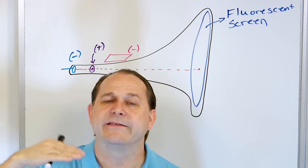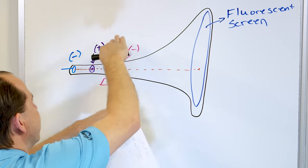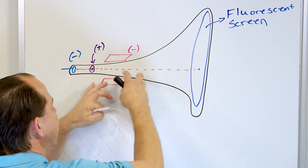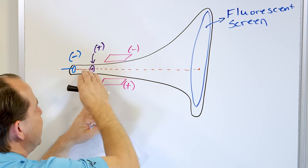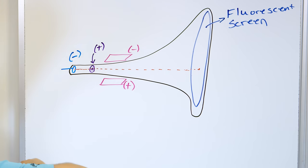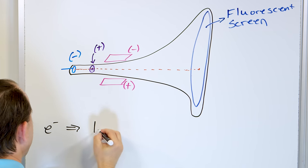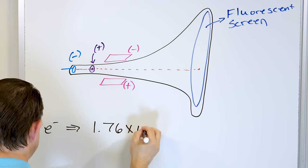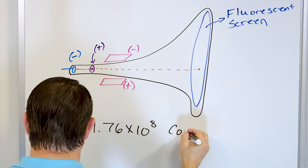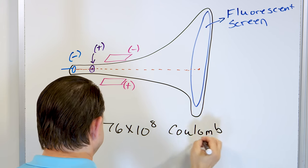When you do these experiments — adjusting different electric fields and canceling them with a magnetic field — what you figure out is that for an electron, the charge-to-mass ratio is 1.76 times 10 to the positive 8 coulombs per gram.